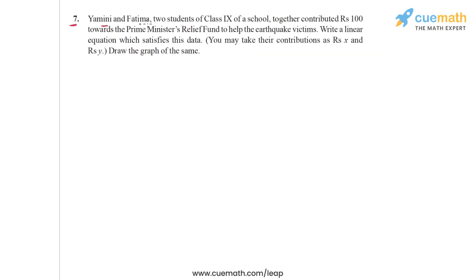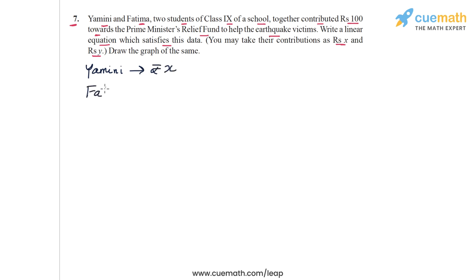Question 7 says that Yamini and Fatima, two students of class 9 of a school, together contributed rupees 100 towards the Prime Minister's Relief Fund to help the earthquake victims. We are told to write a linear equation satisfying this data, taking their contributions as rupees X and rupees Y respectively. So Yamini contributes rupees X and Fatima contributes rupees Y to the relief fund, and together they contributed rupees 100.